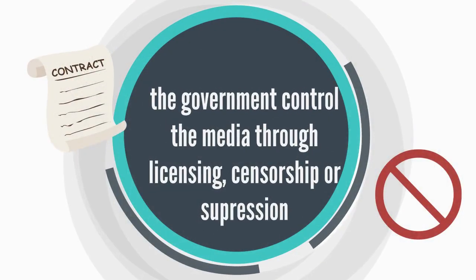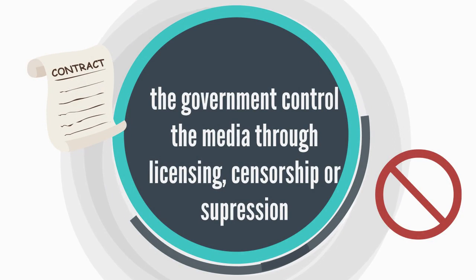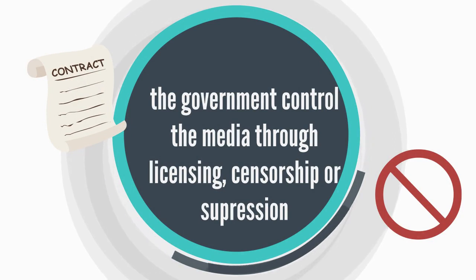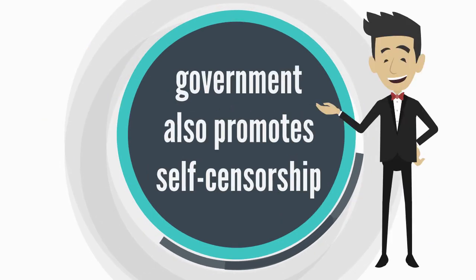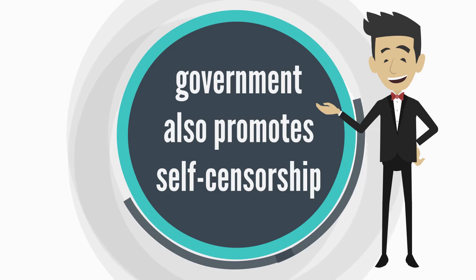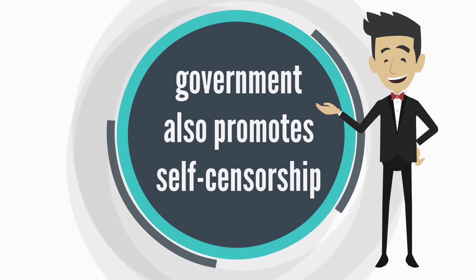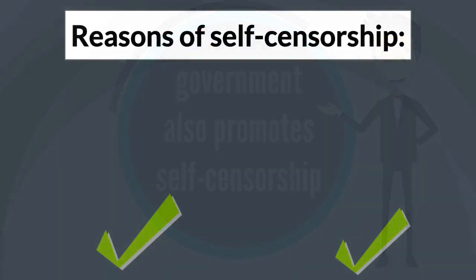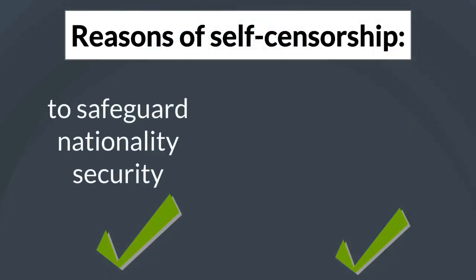The provisions established by the government allow it to control the media through licensing, censorship, or suppression. In addition to formal control, the government also promotes self-censorship, which can be carried out for a variety of reasons.